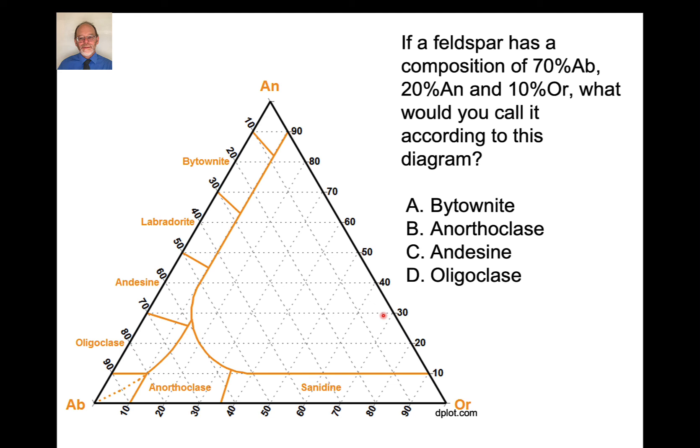So here's a question. If feldspar has a composition 70% albite, albite corner's down here, 20% anorthite, anorthite corner's up here, 10% orthoclase, orthoclase is over here. And these are the names of the different regions for each of the feldspar compositions. What composition would you call that feldspar according to this diagram? The answer is oligoclase. This is the plotting position. And one of the first things I look at is which component is in the greatest abundance. That component is albite. So I have to be close to the albite corner, 90, 80, 70. There are only two possibilities here. It's either oligoclase or anorthoclase. And with only 10% orthoclase, I'm sitting here in the oligoclase field.